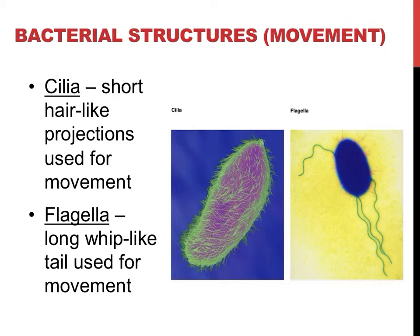Cilia are shown on the left side of the picture on this slide, illustrated in green. Most cells that have cilia possess many of them. They are often described as short, hair-like projections that allow for movement. For an analogy, this would be like hundreds of rowers on a primitive boat. Flagella, on the other hand, are long, whip-like structures used for movement. While most cells contain many cilia, they usually possess one or just a couple of flagella. To stick with the boat analogy, flagella would almost act like a boat's motor.